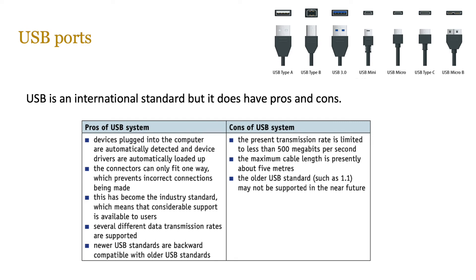USB is an international standard — widely acceptable — but it does have its pros and cons. The pros of a USB system are that devices are automatically detected when plugged in. The connections generally can only fit one way, which prevents incorrect connections. Being an industry standard means there's a lot of support available to users. There are many different data transmission rates supported, and newer USB standards are backward compatible with older ones, so older devices don't become obsolete.